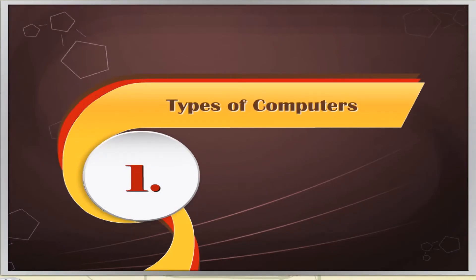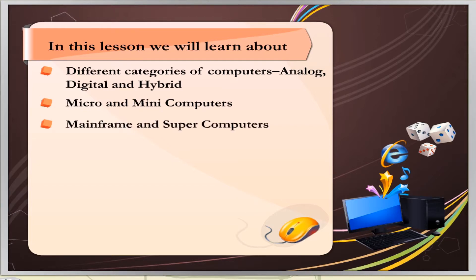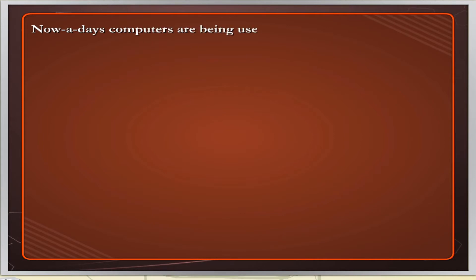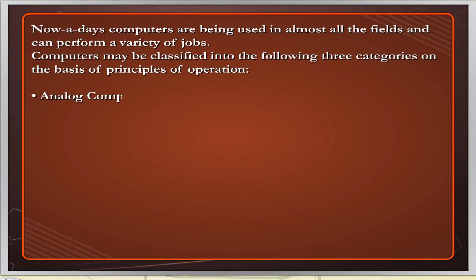Chapter 1: Types of Computers. In this lesson we will learn about different categories of computers: Analog, Digital and Hybrid; Micro and Mini Computers; Mainframe and Supercomputers. Nowadays computers are being used in almost all fields and can perform a variety of jobs. Computers may be classified into three categories on the basis of principles of operation: Analog computers, Digital Computers, and Hybrid Computers.